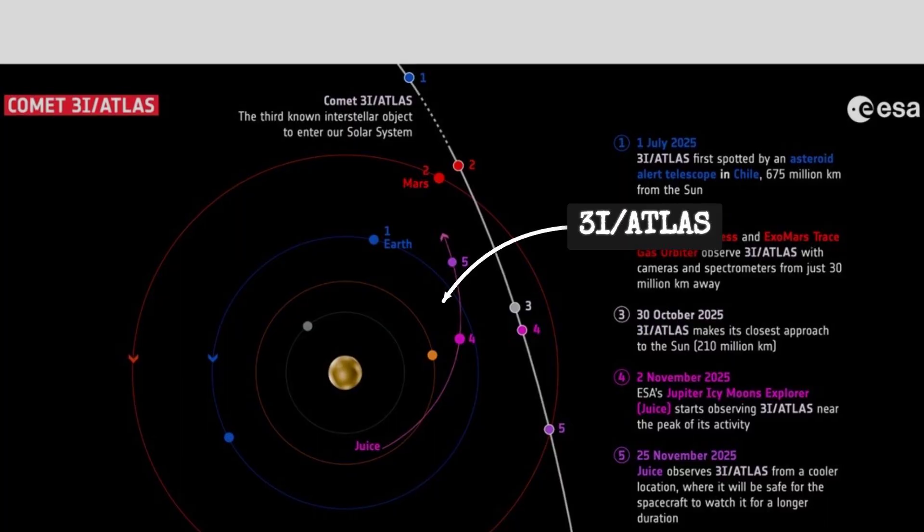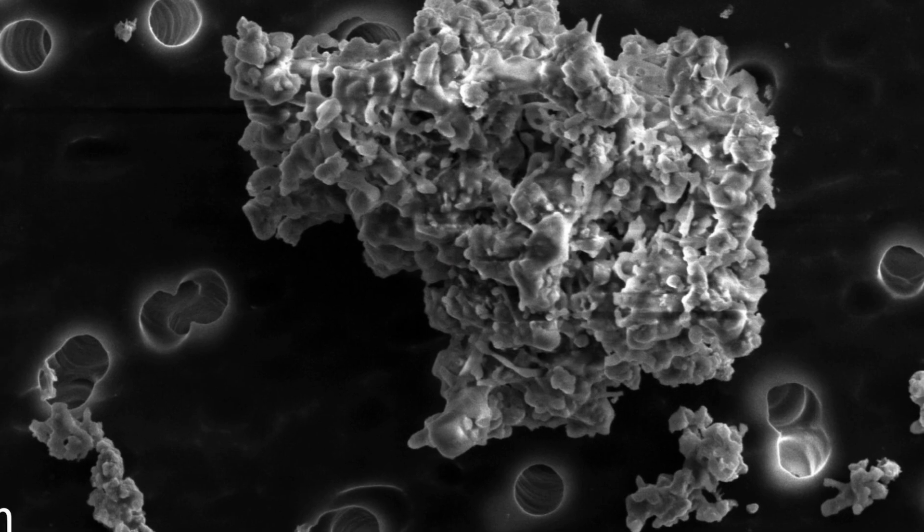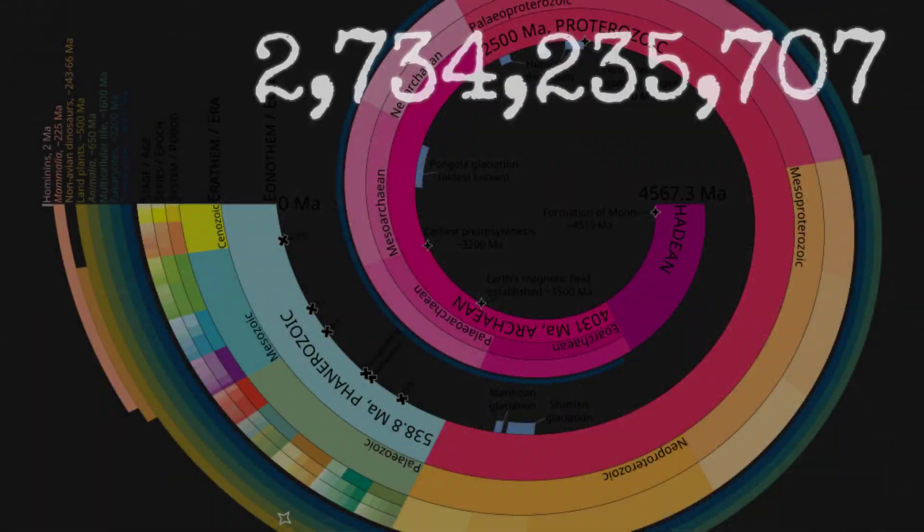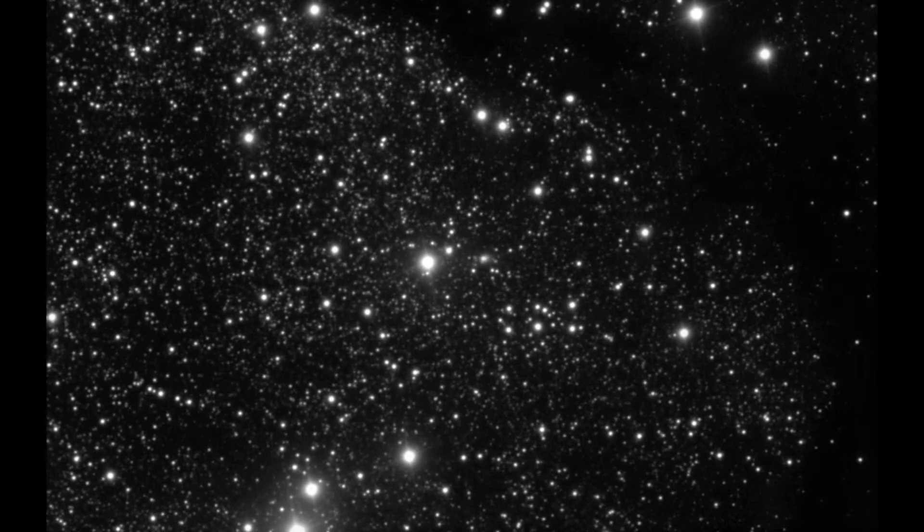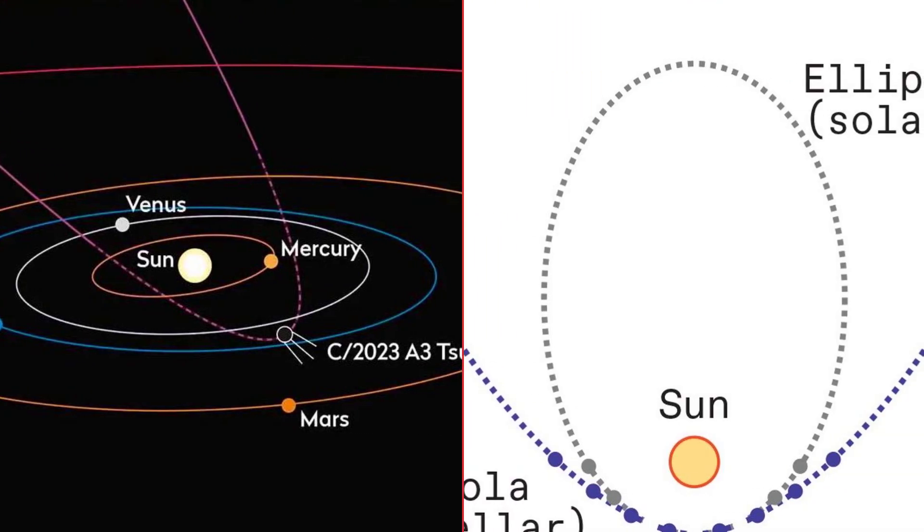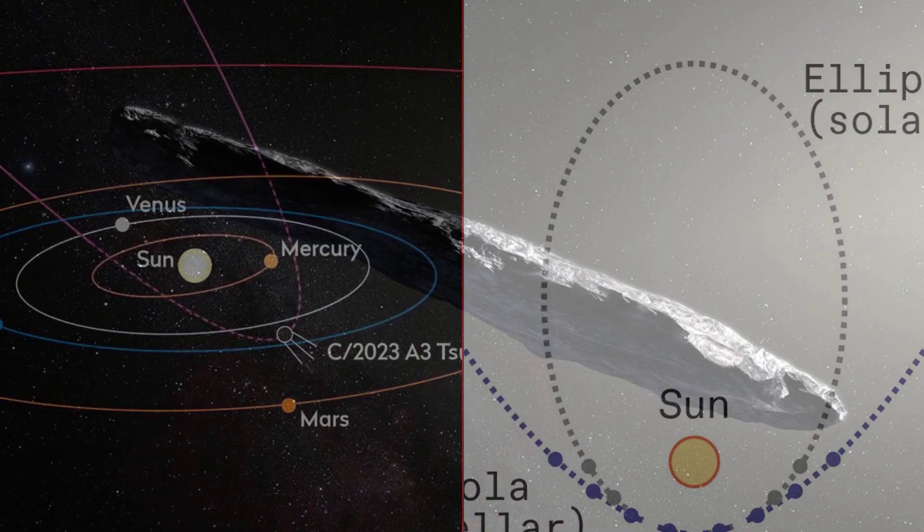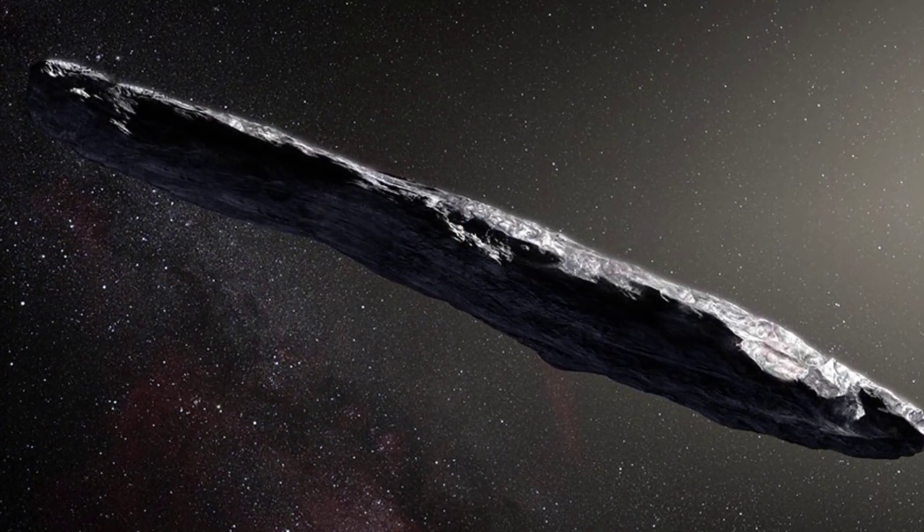The initial data suggested something even more remarkable. This comet might be older than the solar system itself, possibly by 3 billion years. Its hyperbolic path, calculated from dozens of follow-up observations, left no doubt. This was not a wanderer returning home, but a visitor passing through, a relic from a time and place no human instrument has ever seen.